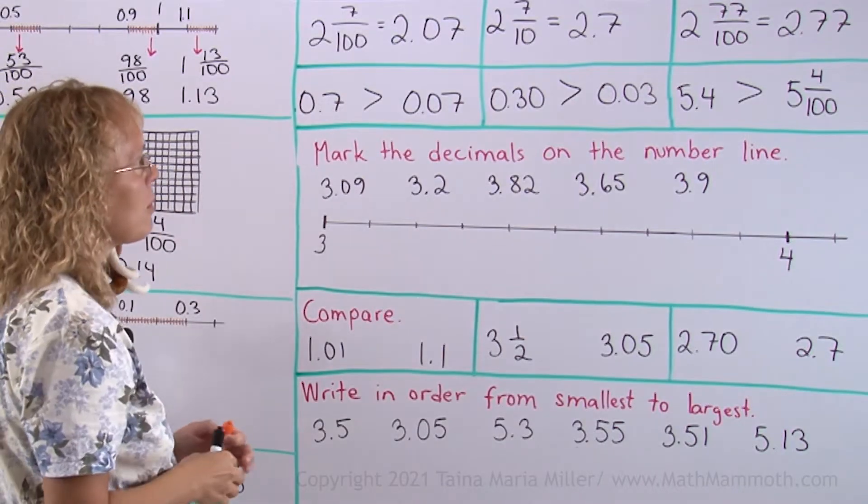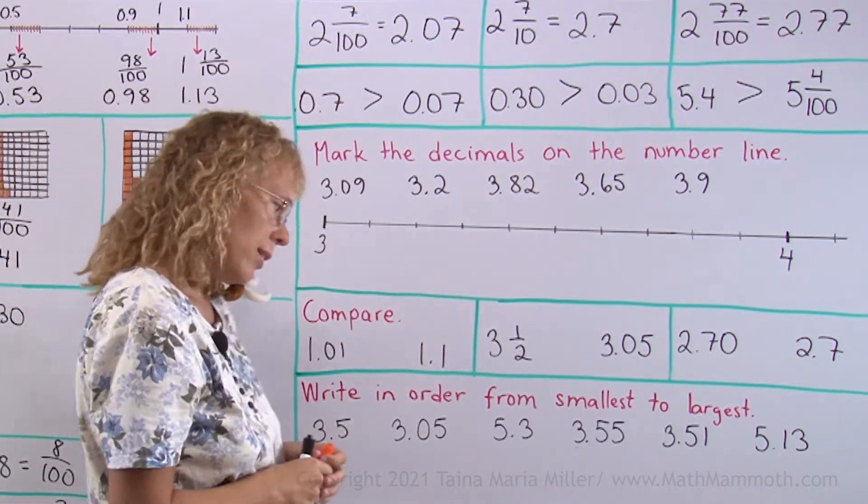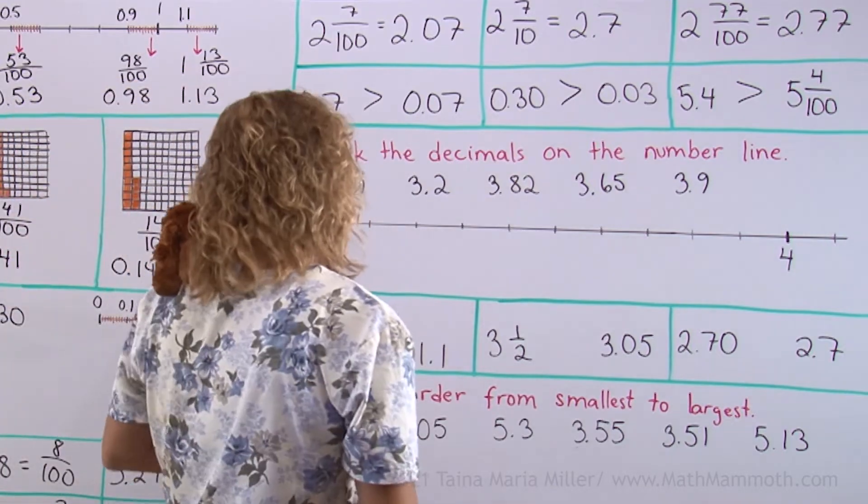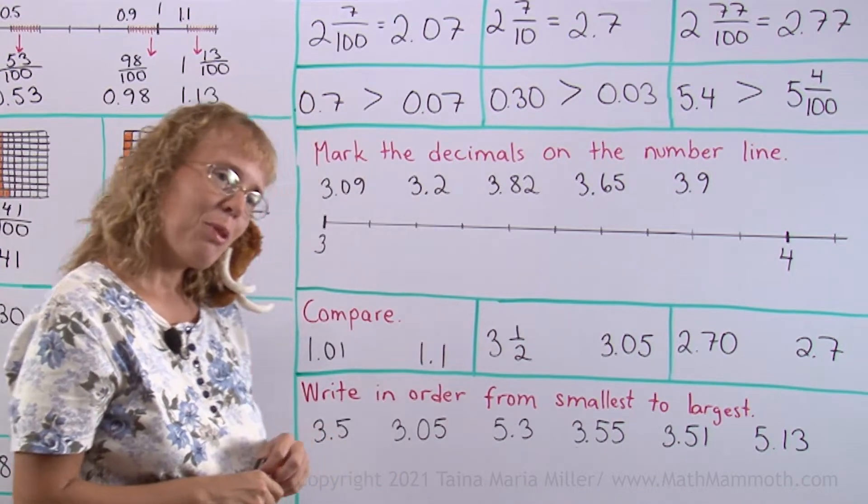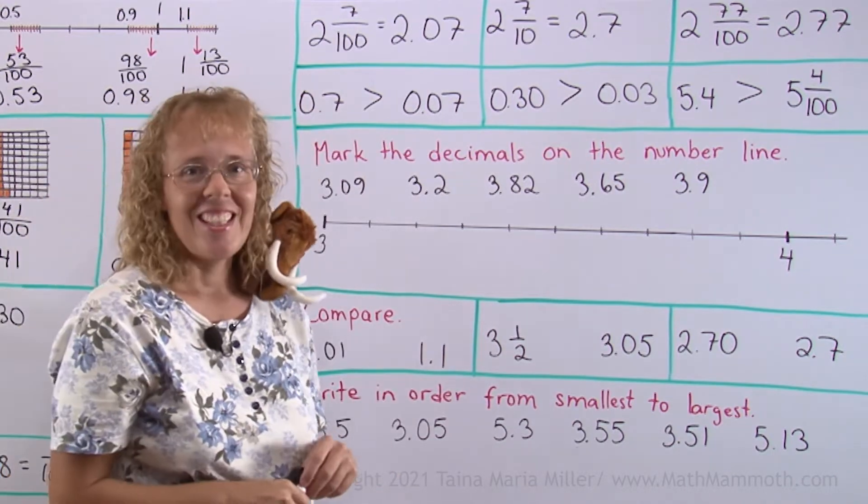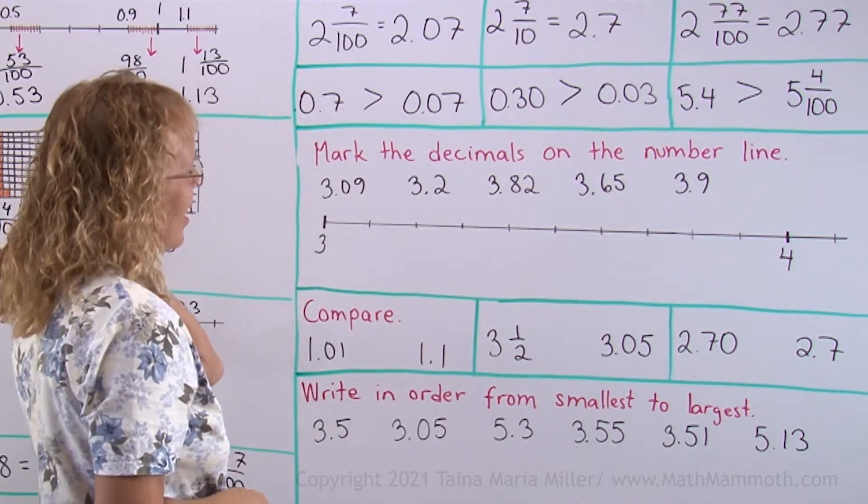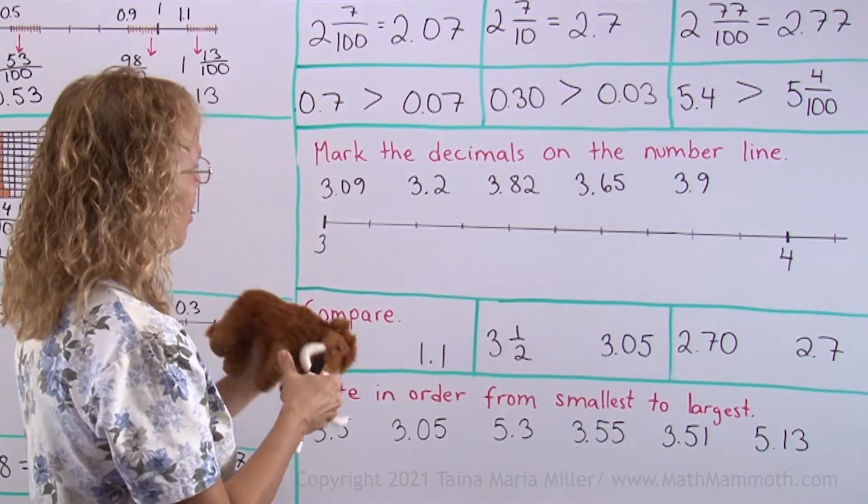Now, we're going to mark the decimals on the number line. What is it, Matthew? Oh, Matthew is asking for permission to jump on the number line. He likes jumping on the number line. Well, maybe. This is big enough. Maybe you can do that.